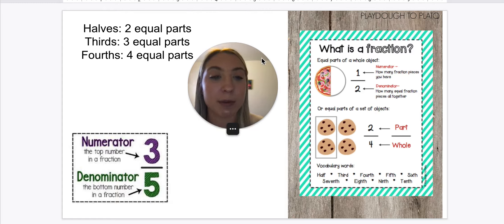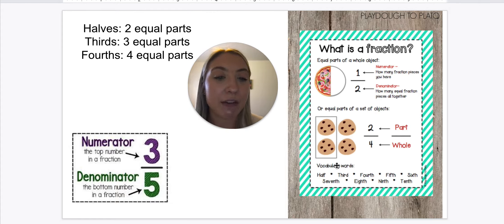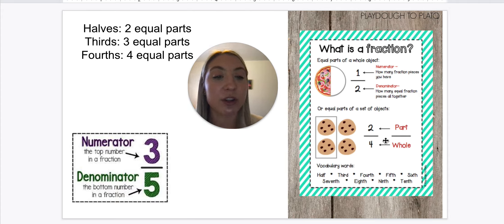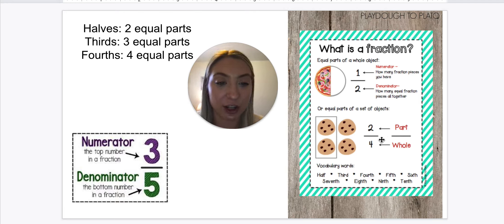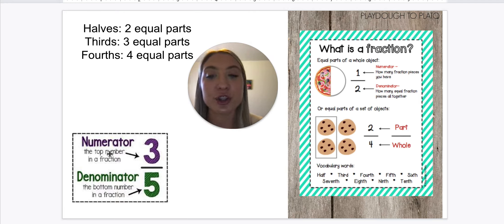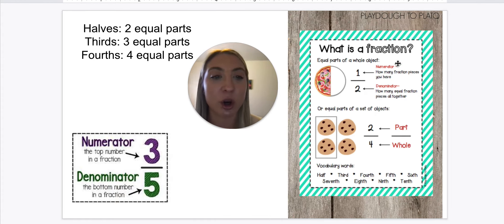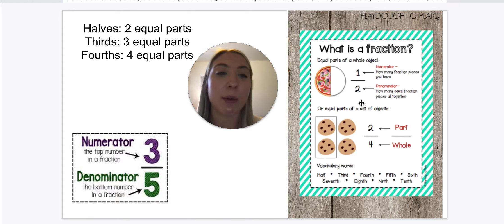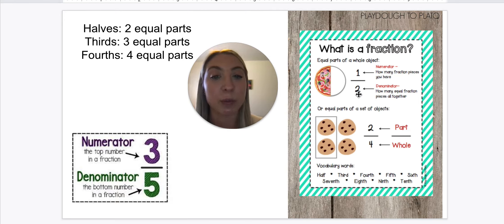The denominator is how many equal fraction pieces altogether — that's our total amount of parts. So our bottom number will always be two, three, or four. So if we have four cookies and I take two of them, I take two of the total four, so I just took two fourths of the cookies. Our numerator is the top number, our denominator is the bottom number — the numerator is always how many are shaded, and the bottom number is always the total amount of equal parts.